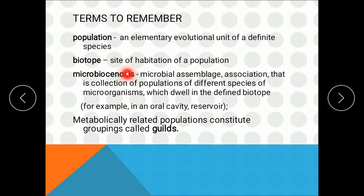For example, if I give a biotope such as the oral cavity, in the oral cavity there will be populations of different species residing together in the same habitat. This collection or assemblage is known as microbiocinosis. When there are populations that are metabolically related, they constitute a guild — populations of different species that are metabolically related.